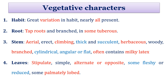When we discuss vegetative characters, habit shows great variation and nearly all types of habits are present — like herb, shrub, trees, and climbers. As it is a dicot member, a taproot system is present, but some plants also show a tuberous type of roots. Stem is aerial, erect, climbing, thick and succulent. Succulent means a stem which has water retention capacity. Some members of Euphorbiaceae are found in arid conditions, and in such conditions the plant shows a succulent type of stem to retain water.